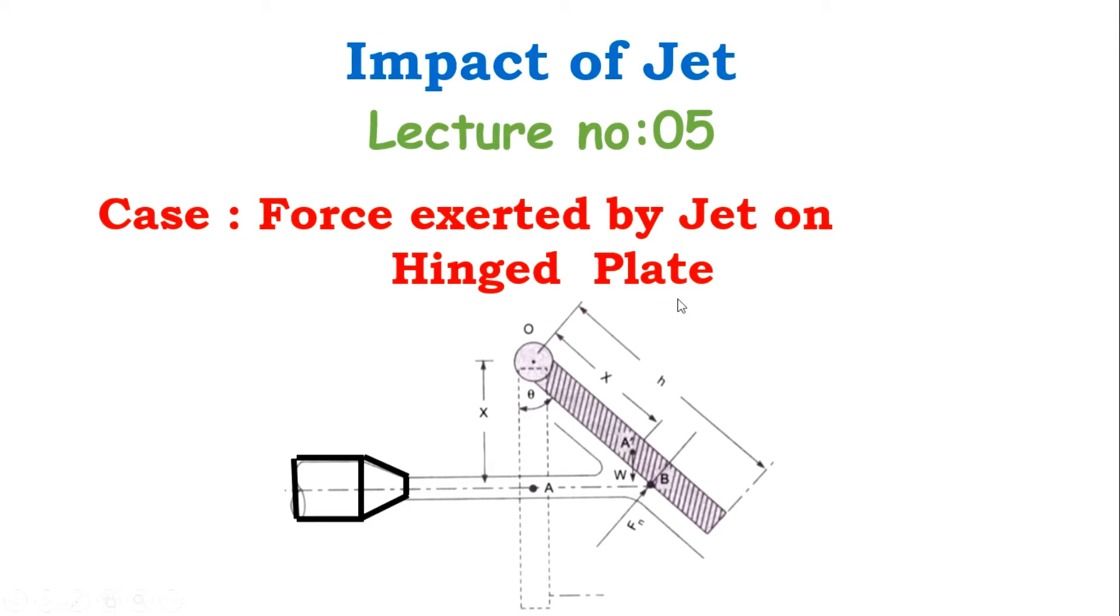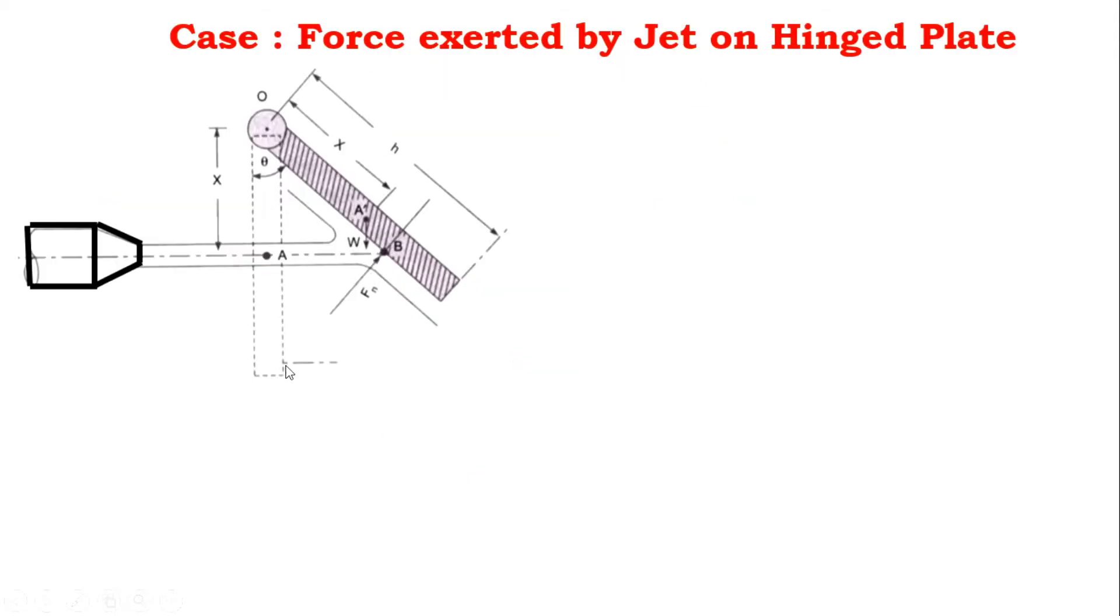Let us consider a jet of water striking a vertical plate at the center which is hinged at a point O as displayed in the figure. When the jet of water strikes the plate, the plate will swing through an angle about the hinge as displayed here.